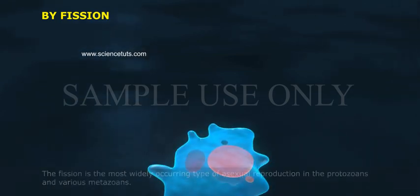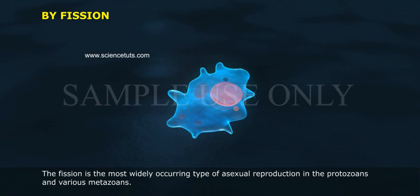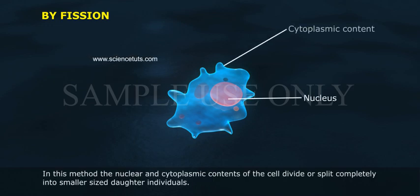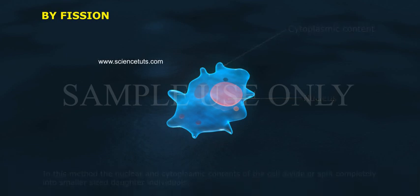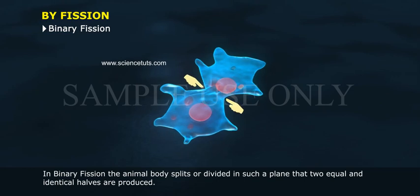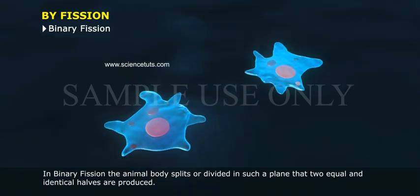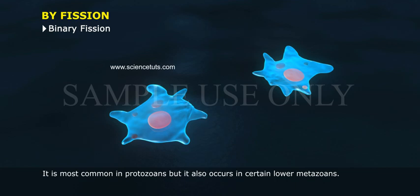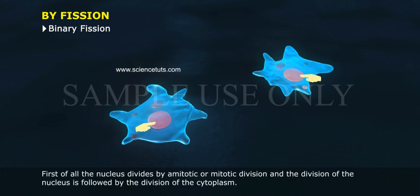By Fission. Fission is the most widely occurring type of asexual reproduction in protozoa and various metazoans. In this method, the nuclear and cytoplasmic contents of the cell divide or split completely into smaller sized daughter individuals. In binary fission, the animal body splits or divides in such a plane that two equal and identical halves are produced. It is most common in protozoans but also occurs in certain lower metazoans. First, the nucleus divides by mitotic division, followed by division of the cytoplasm.